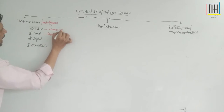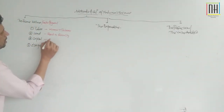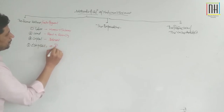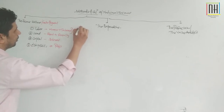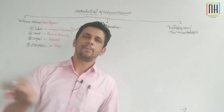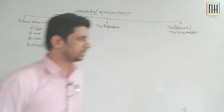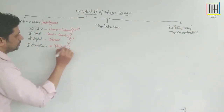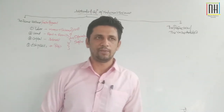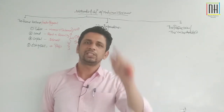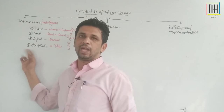Against land we pay rent or royalty. Against labor we pay wages and salaries to workers. Against capital we pay interest, and against entrepreneurship skills the entrepreneur earns profit. In this method, wages and salaries are called Compensation of Employees (COE) — whatever amount employees receive from employers. Income from land and capital, plus profits, forms the Operating Surplus. The third constituent is the Mixed Income of the self-employed.